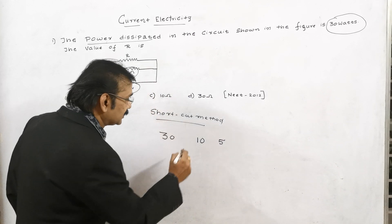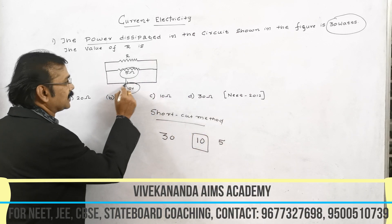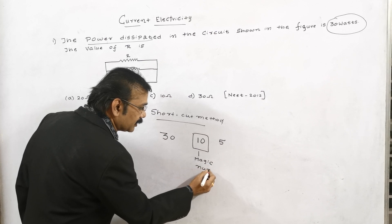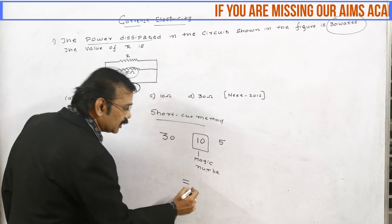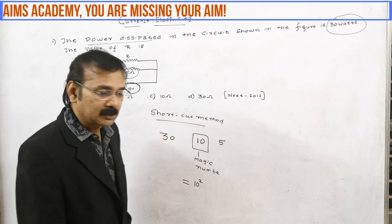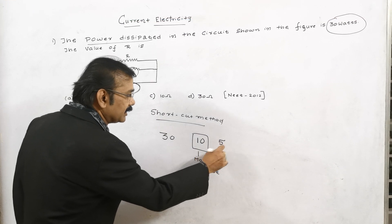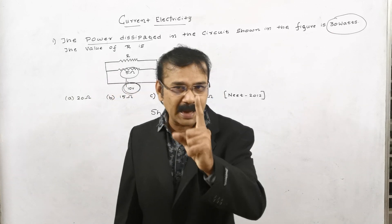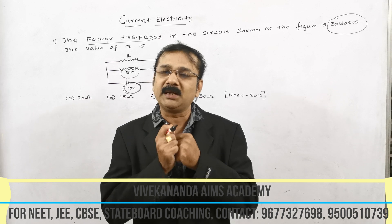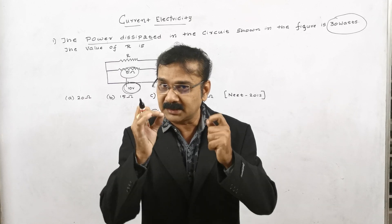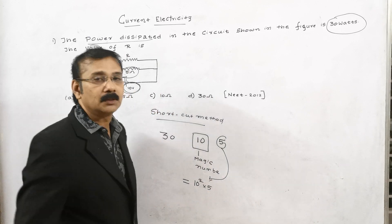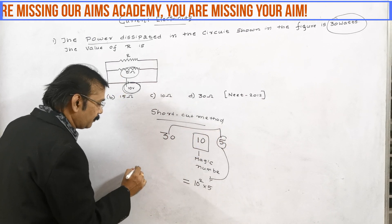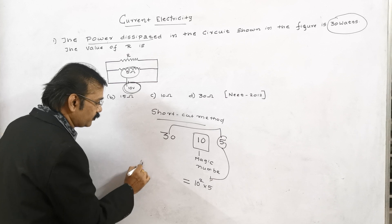Now let us go for the important method — please note this. Take the particular number which is voltage. This is the magic number — remember this. What I am going to do is first square this number. If you square 10 you get 100. Then multiply this and the nearest number with it, so we get 100 into 5. Whatever the key number is, do the same method: 10 squared into 5. Then multiply to get 20 into 5, which gives us 150R.